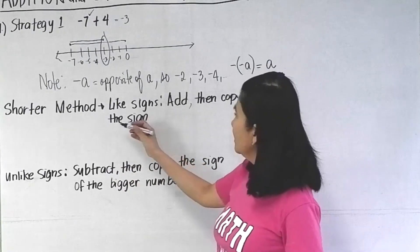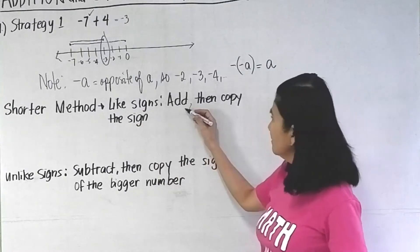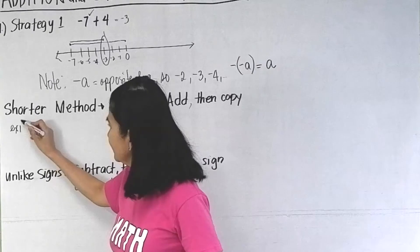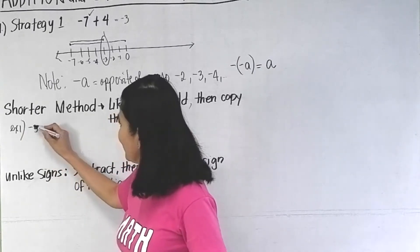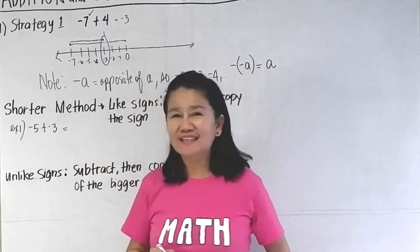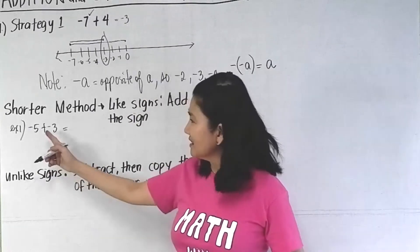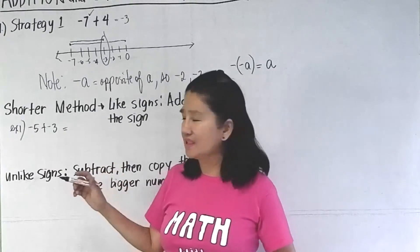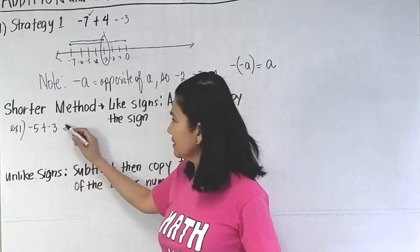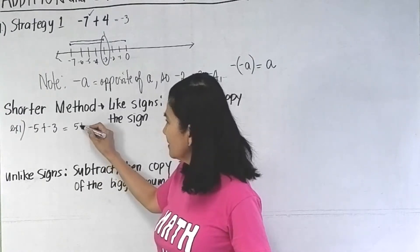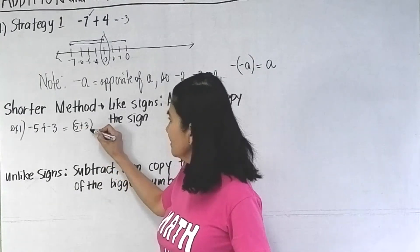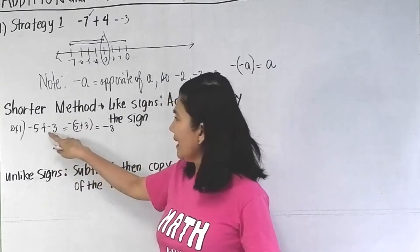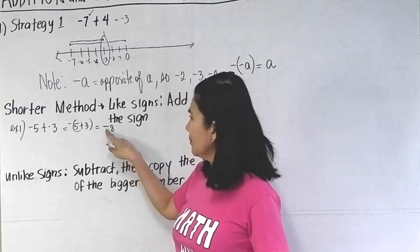Like signs. The rule in adding like signs is that you add, then copy the sign. For example, negative 5 plus negative 3 — they are like signs, both negative. Just add the absolute values: add 5 plus 3, which gives you 8.